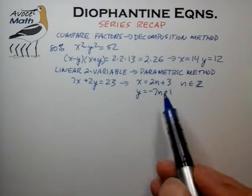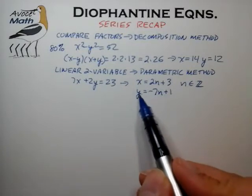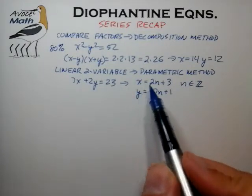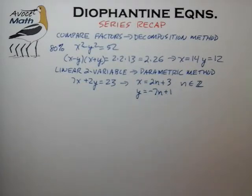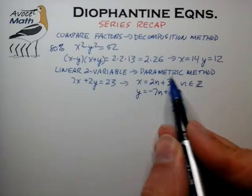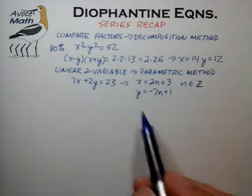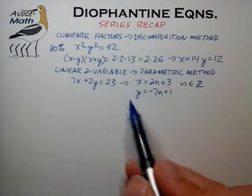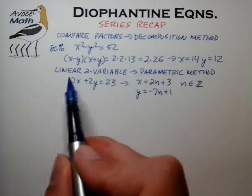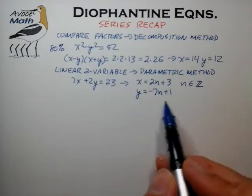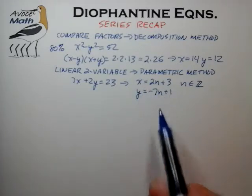We call this the parametric method because instead of representing x in terms of y or y in terms of x, we represent these variables in terms of some third variable, which is often called a parameter. These equations are often called parametric equations, and thus the name the parametric method. In general, there are much more complicated parametric equations one can conceive of, but for our purposes we're generally dealing with linear two-variable equations of the kind you see here to the right.